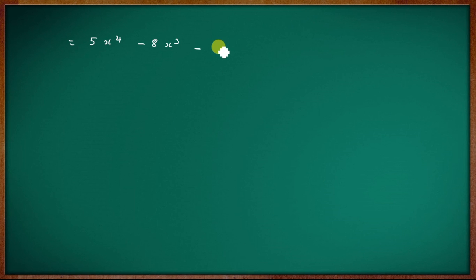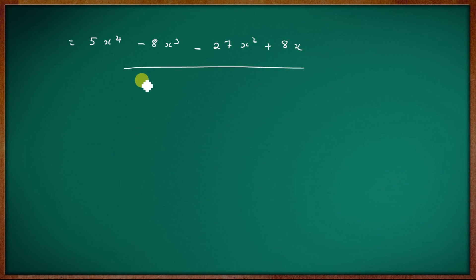Simplifying all terms gives the final answer: 5x⁴ − 27x² + 8x. This is the product rule answer.